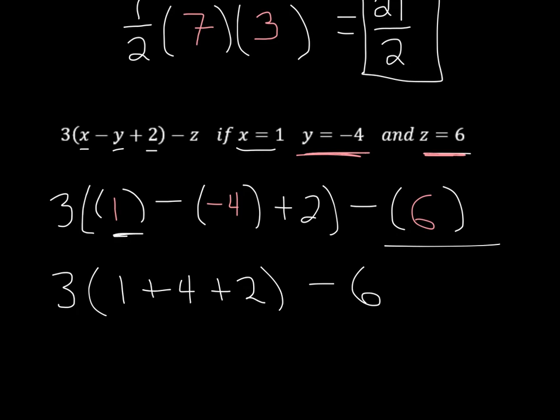Again, we don't need those parentheses around the 6. So we're getting there. Now let's take a look at what's inside these parentheses. 1 plus 4 is 5, right? 5 plus 2 is 7. So we are going to have 3. What's inside the parentheses is 7 minus 6. Again, all we're doing is following order of operations here, right?